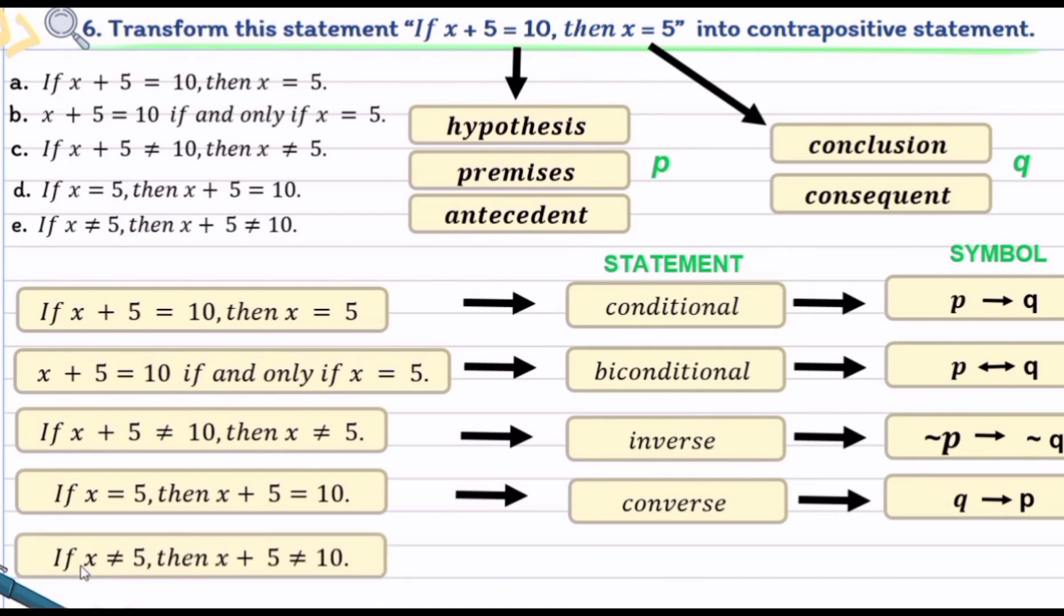The last is option e: if x is not equal to 5 then x plus 5 is not equal to 10. If we're going to negate the converse, we call it a contrapositive statement. You're going to put the symbol not q then not p. We have now the contrapositive symbol. Therefore, in this problem the answer is letter e.